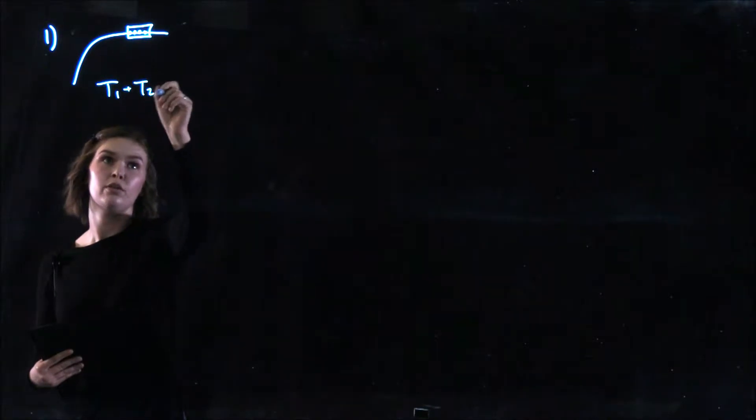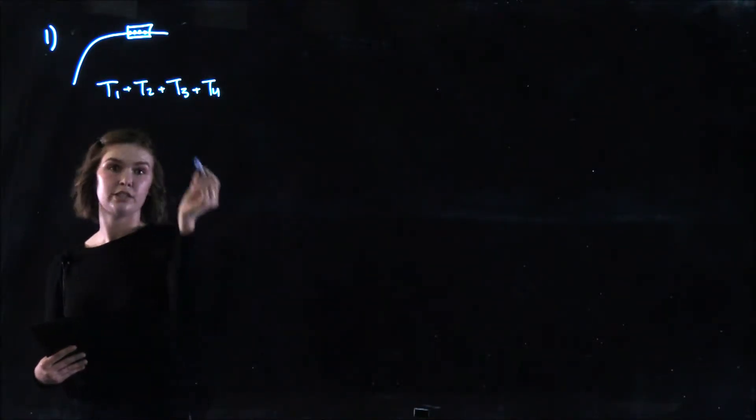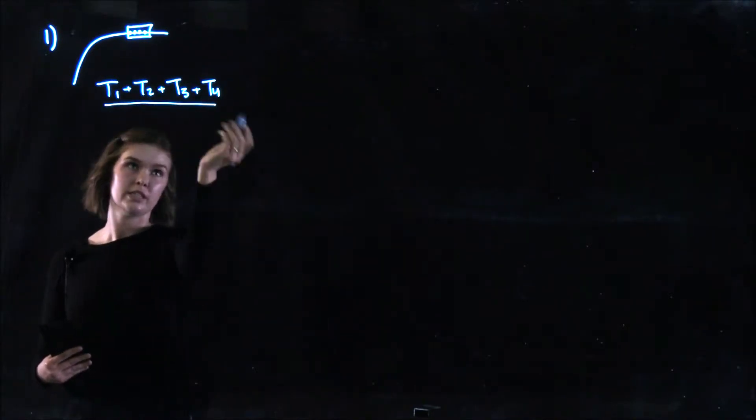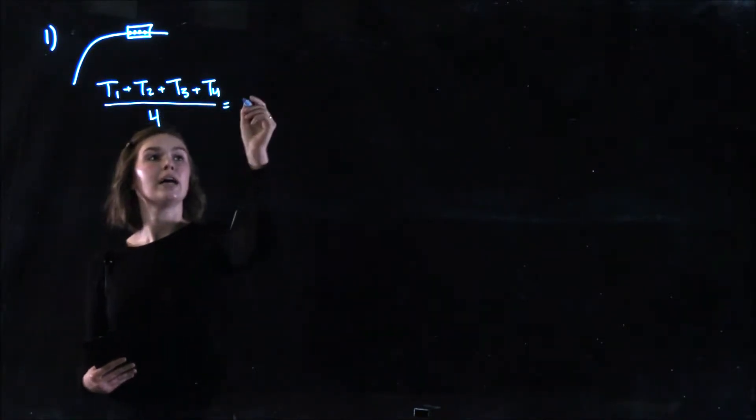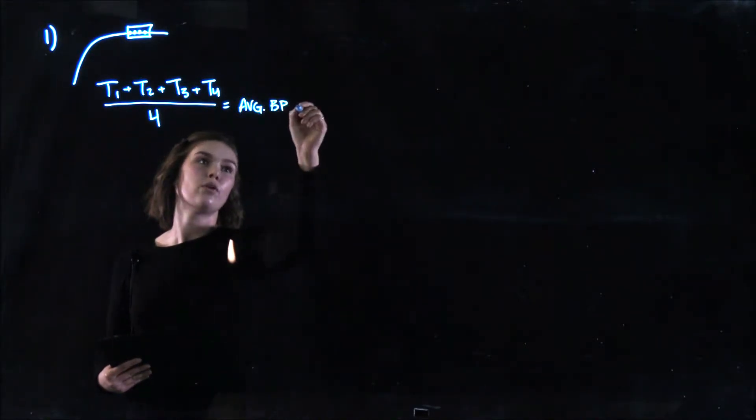So T1, T2, T3, and T4. And you're going to divide it by the number of samples, which in this case is four. And that's going to give you your average boiling point of your solution.